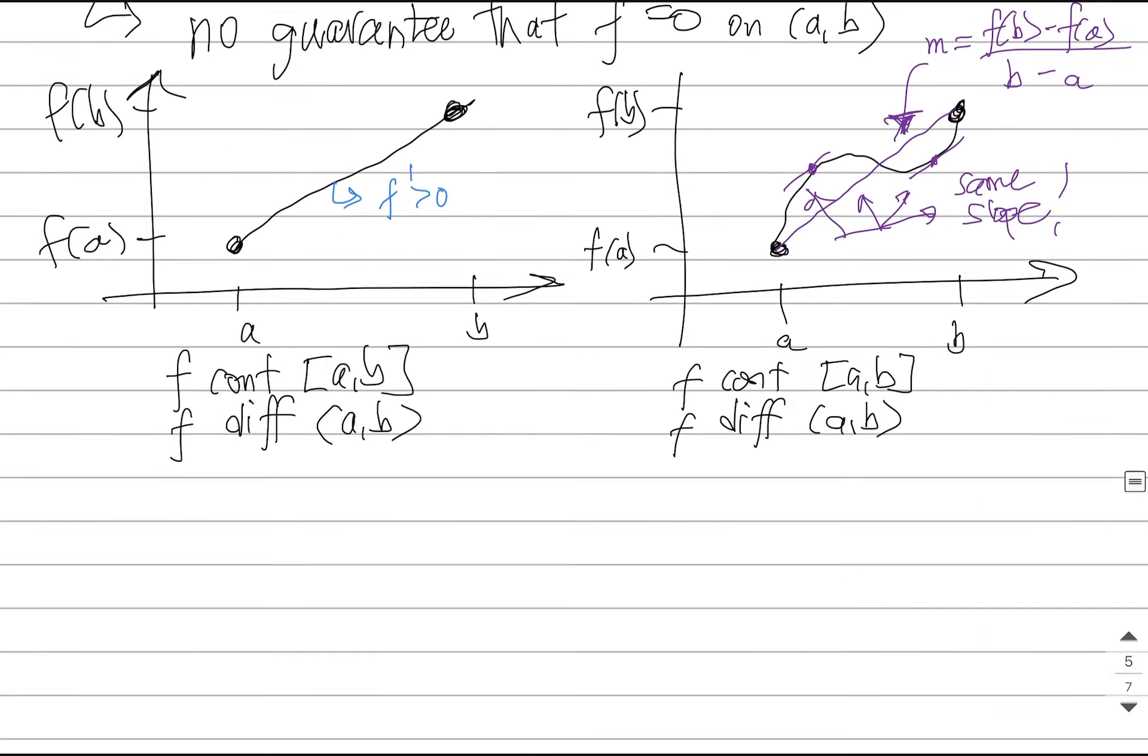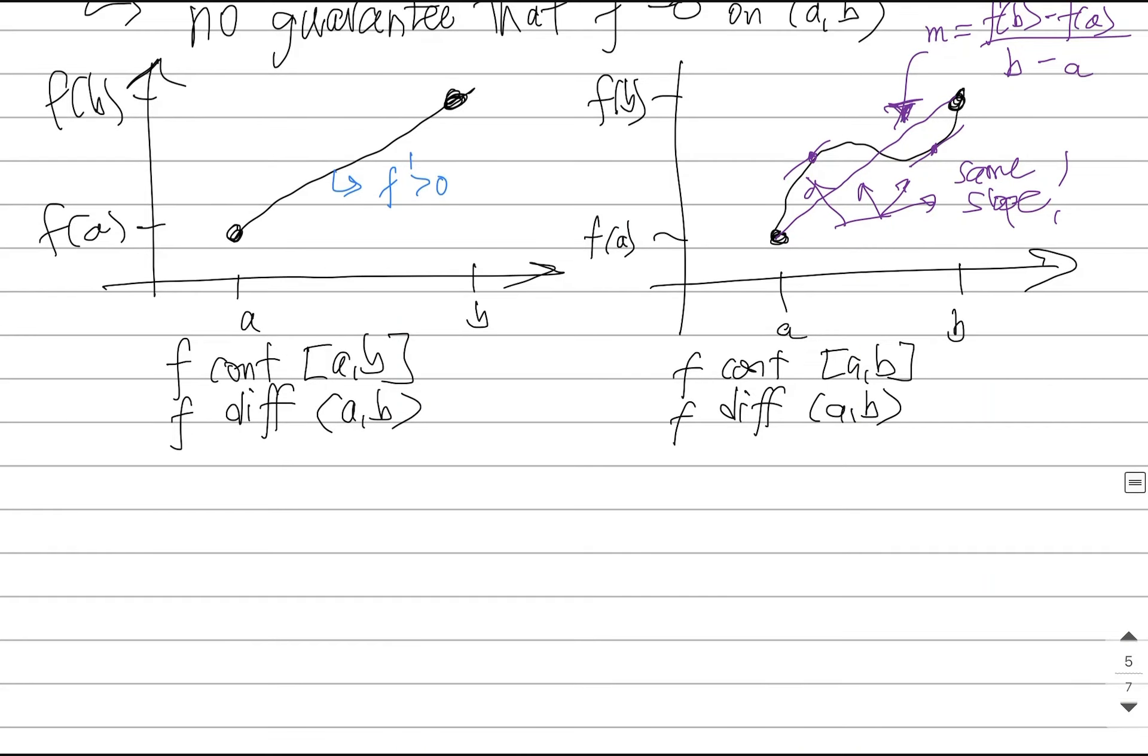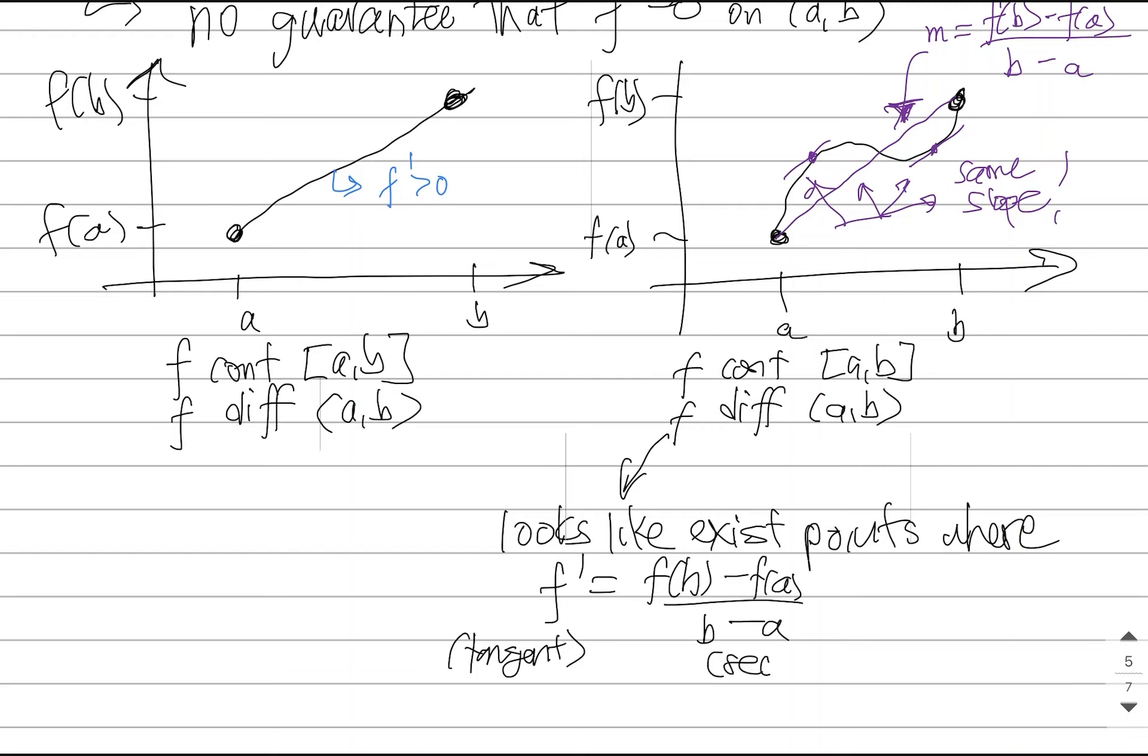These all have the same slope. In fact, if you kept testing this with other pictures, it looks like there exists points on the graph where the tangent slope equals f(b) minus f(a) over b minus a, the secant slope. So the tangent slope equals the secant slope.